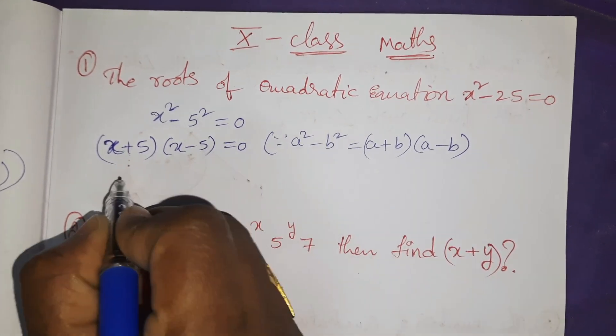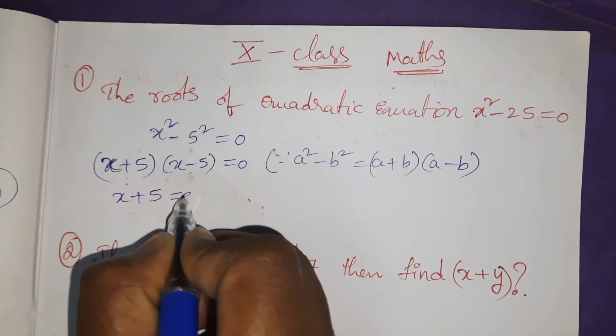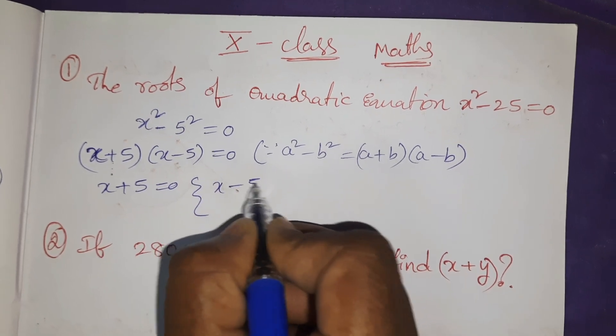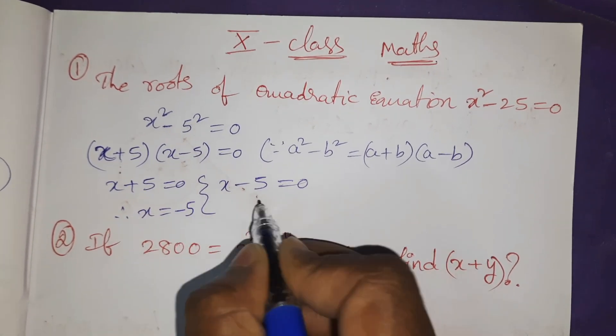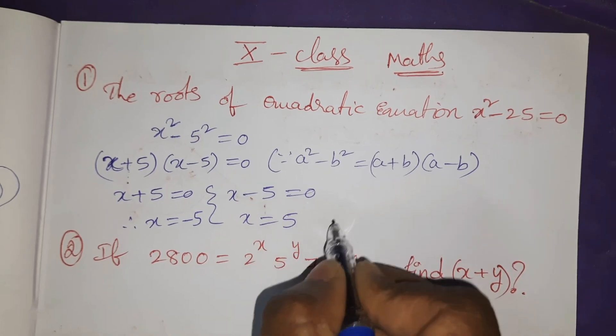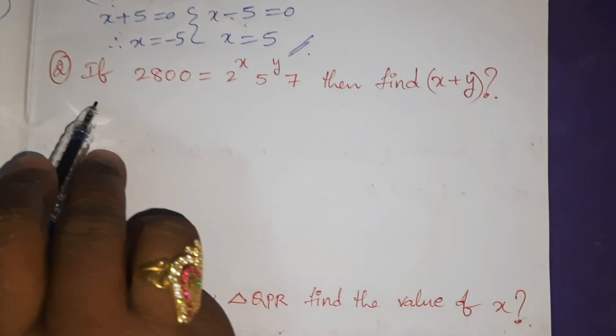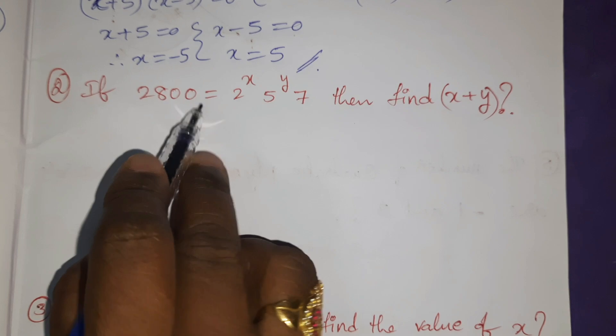Equals to 0. x + 5 = 0, one case. x - 5 = 0, another case. Therefore x = -5, x = +5. Next, second question: if 2800 = 2^x × 5^y × 7, then find x + y.